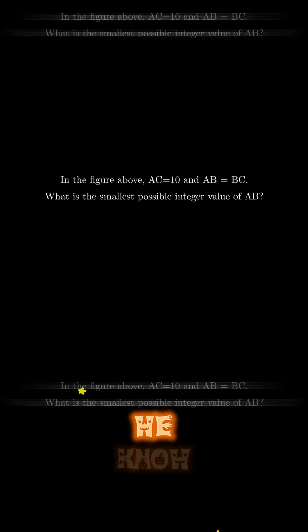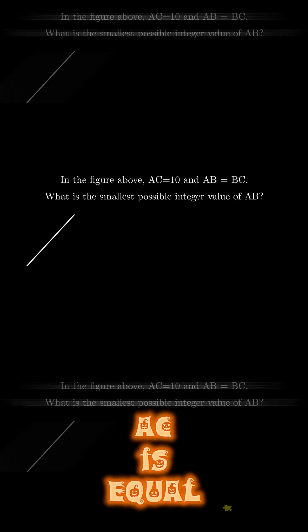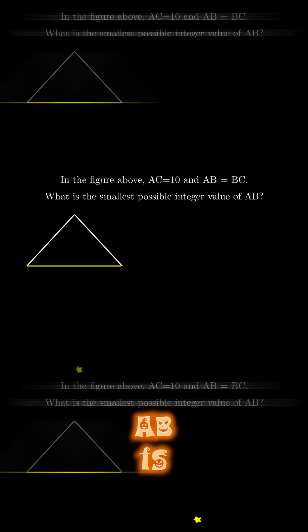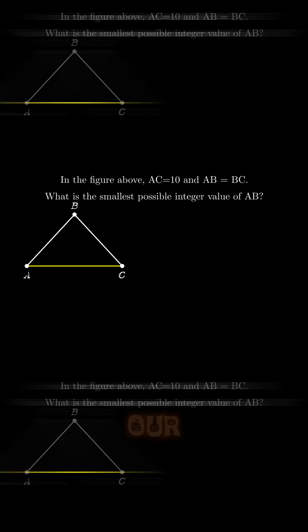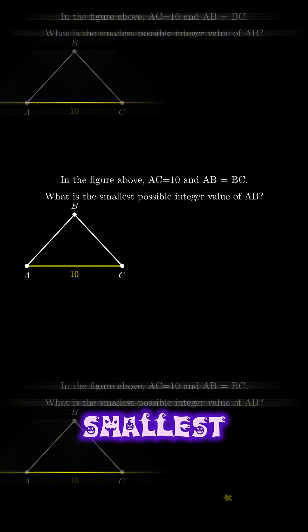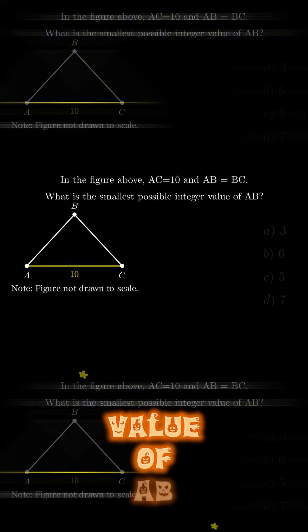In the figure above, we know that AC is equal to 10 and AB is equal to BC. Our goal is to find the smallest possible integer value of AB.